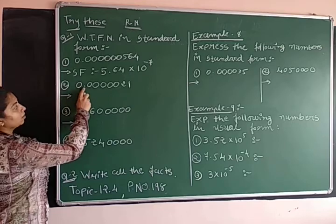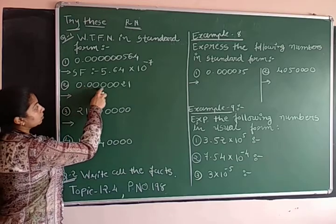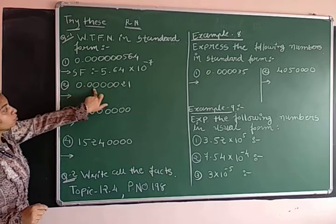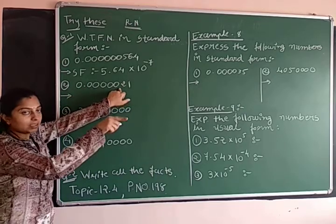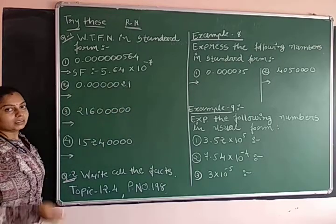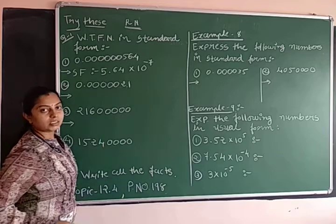Second one, here also 0.0000001. So point will move to this direction which is the right.